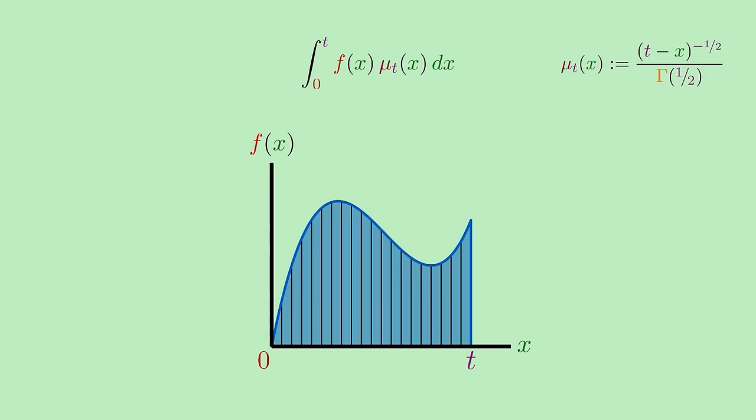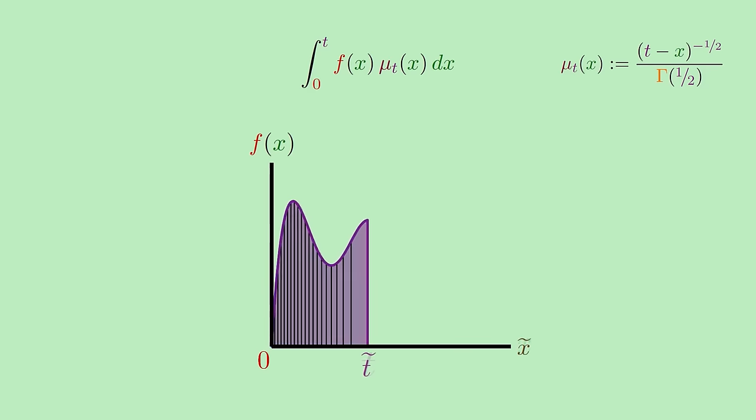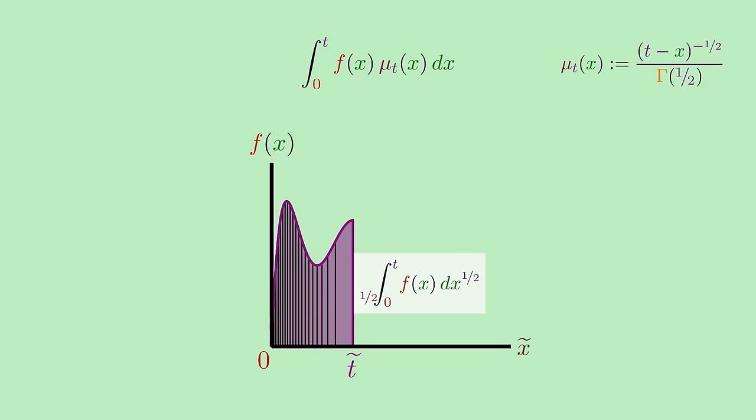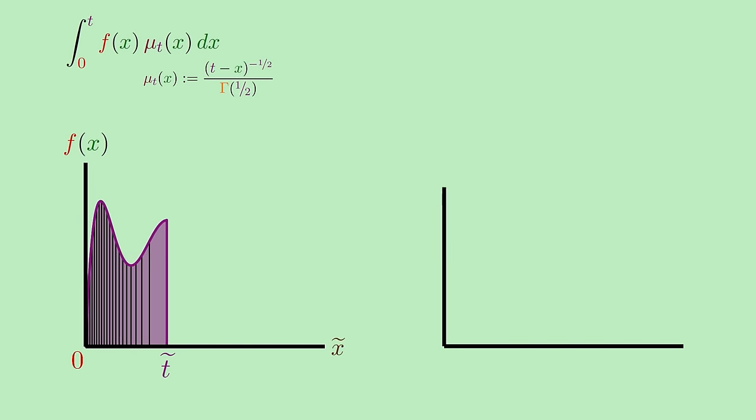The amount each rectangle is horizontally scaled is given by the same mu t of x factor in the integrand, where x refers to the position of a given rectangle. Doing this to all of the mini rectangles produces a new area representing the value of the half integral of f at t. What's nice about this picture is you can still make out the original f curve on top of the new integration area. It's just been stretched and squished a bit, sort of like an accordion.